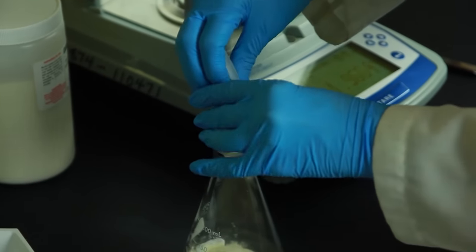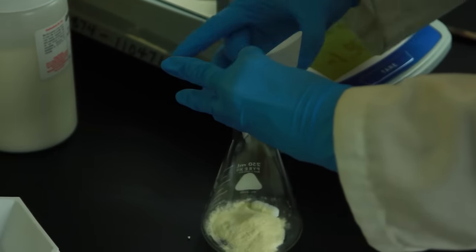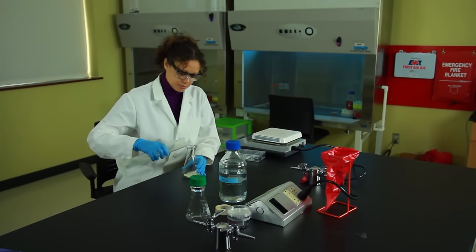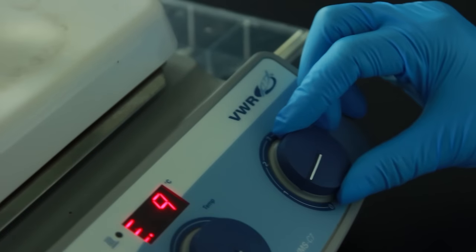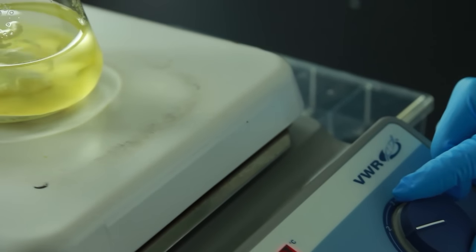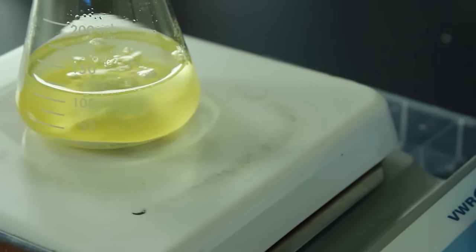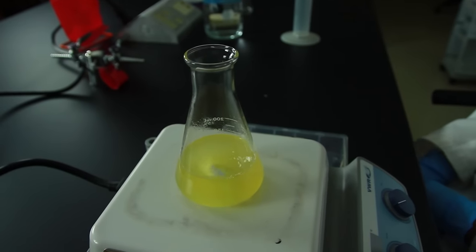Now add the powder to the flask. Add about 75 milliliters of deionized water. Place the flask onto a stir plate. If you're using a combination hot plate and stir plate, be sure that the heat is turned off.